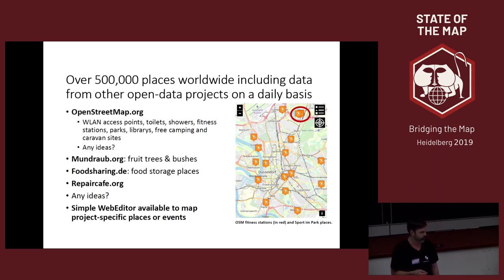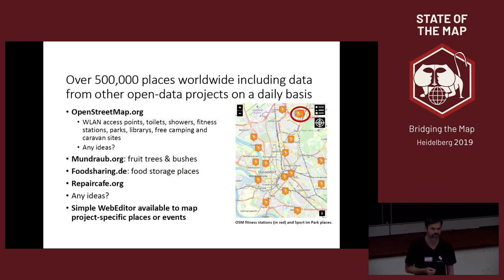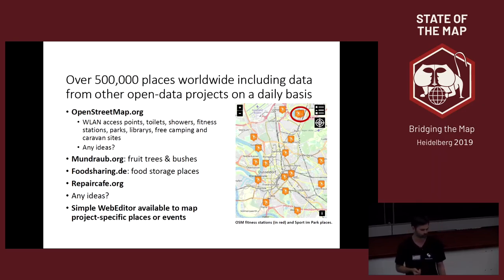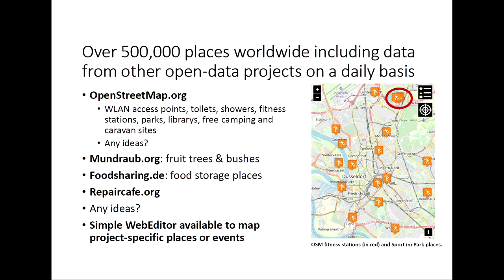If you have any ideas what's left out, please get in contact. We also have all the public food storage places from foodsharing.de and the repair cafes. The database should be extended in the future. We also have a simple web editor available to map more project-specific places, or better called events. On the right side you see the city of Düsseldorf with a category of sport in the web app — there are over 20 categories available. In the northeast, marked in red, are OSM fitness stations, and all other places are temporary weekly sports events called Sport in the Park in Düsseldorf, where you can do many sports from aerobic to Zumba, but only for a special time — these are temporary events.